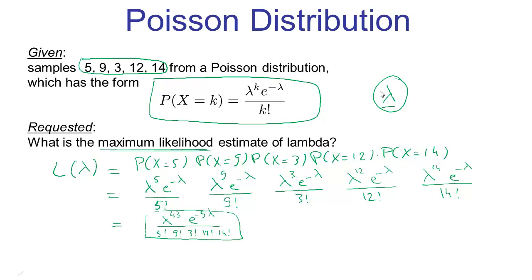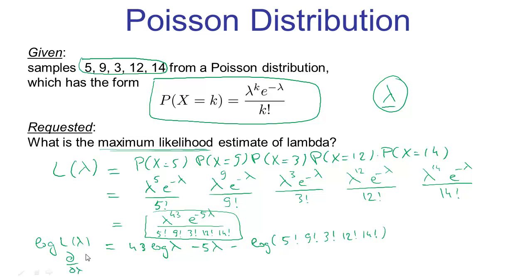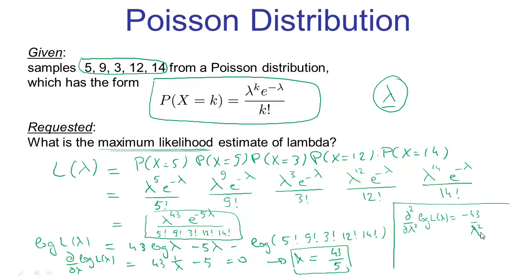It's easier to work with the log likelihood, and we know that the same parameter maximizes both. Setting the derivative of the log likelihood with respect to lambda equal to 0 and solving gives us lambda equals 43 over 5. To verify this is a maximum, we compute the second derivative, which is minus 43 over lambda squared — a negative number for any value of lambda. Therefore, the maximum likelihood estimate for lambda is 43 over 5 for this data set.